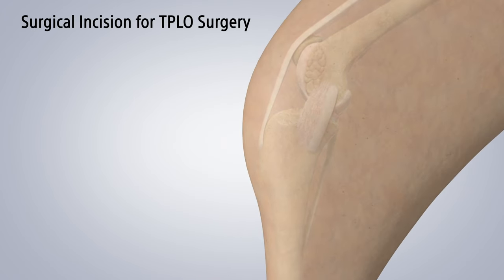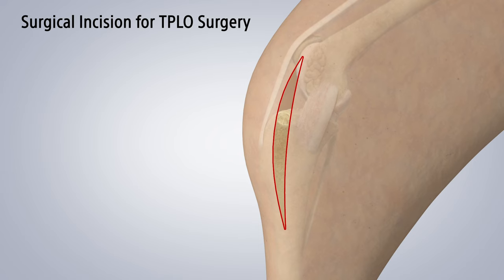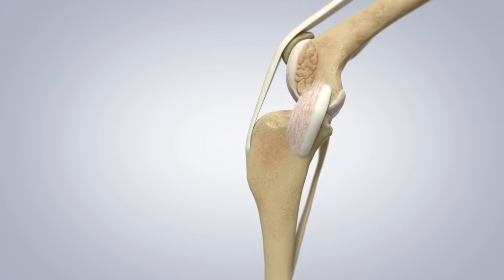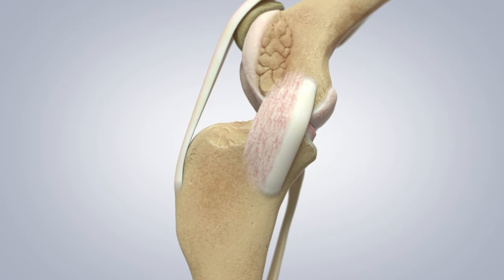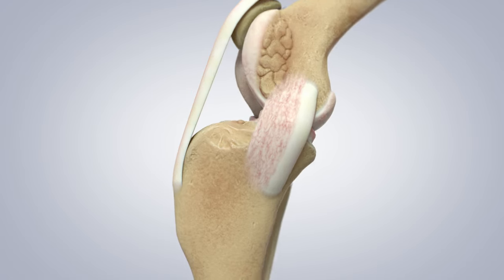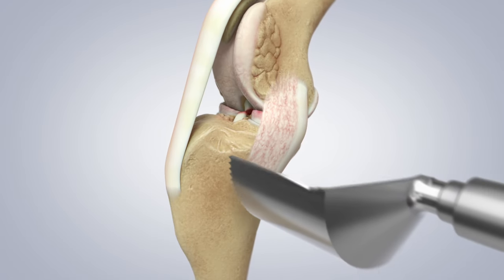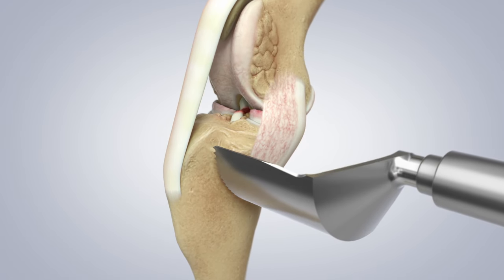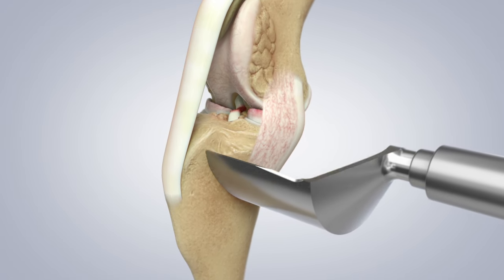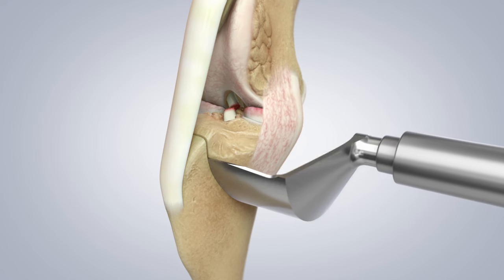We make a skin incision over the medial aspect of the proximal tibia. This incision allows us to access the top of the tibia. A special blade is used to avoid excessive trauma when cutting the bone. This blade is planned for and then carefully inserted, and the tibial osteotomy is performed.